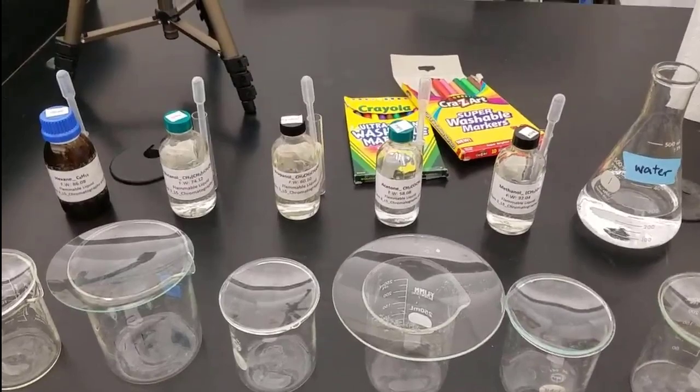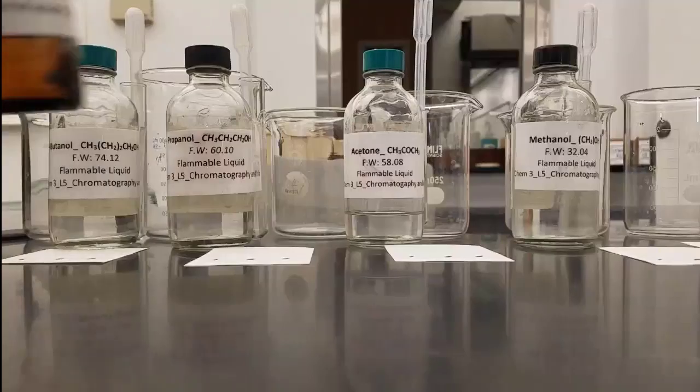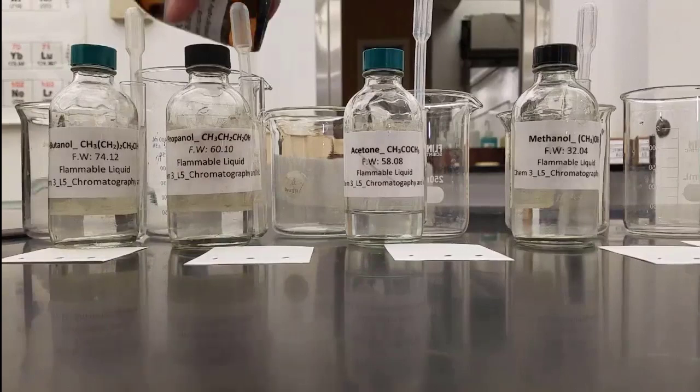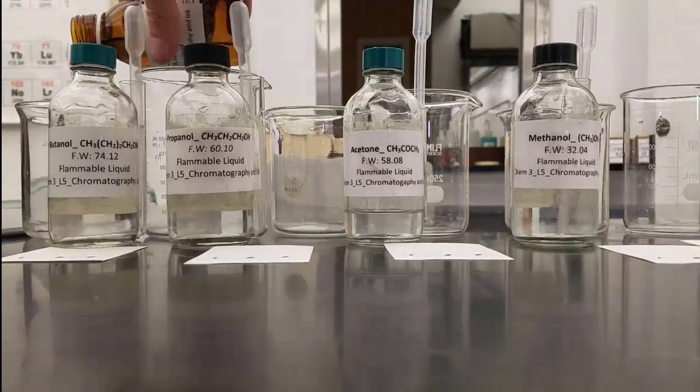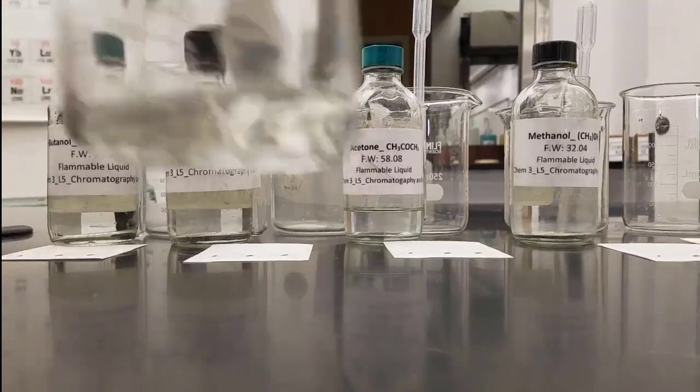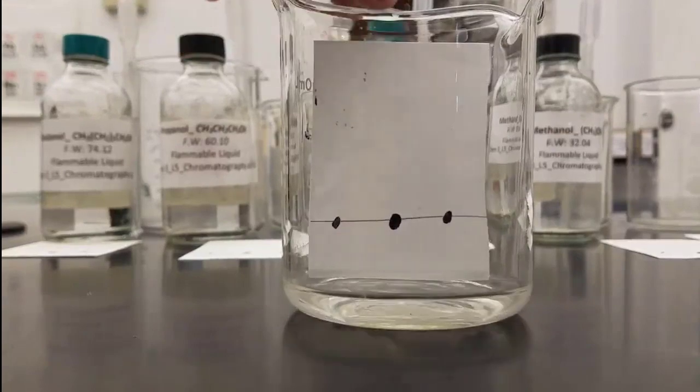Each beaker is going to contain a different solvent, so each of the papers will be prepared with three spots as you just saw. The first beaker will contain hexane. We pour about a centimeter, centimeter and a half of hexane into the beaker, just enough to cover the bottom of the paper because it's going to get soaked up by the paper.